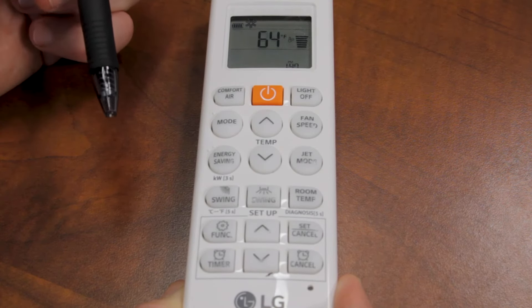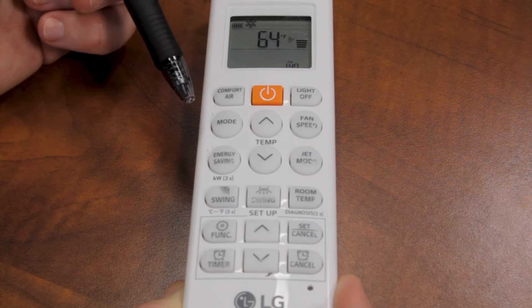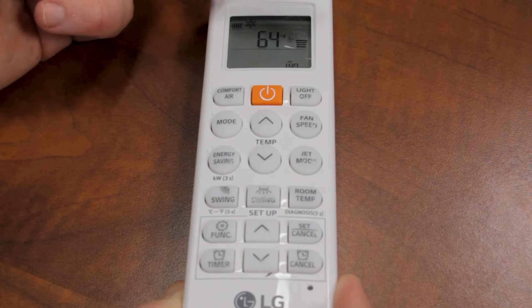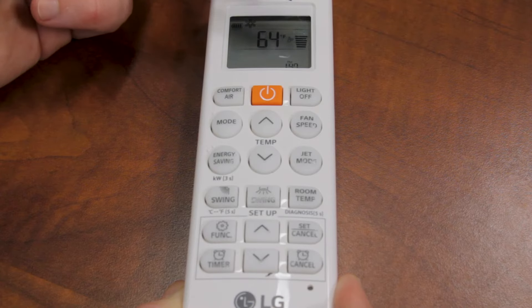If the temperature of the room is 70 and you want it at 65, right when you turn it on, the fan will be high. As it gets closer to 65, it's going to slow itself down.